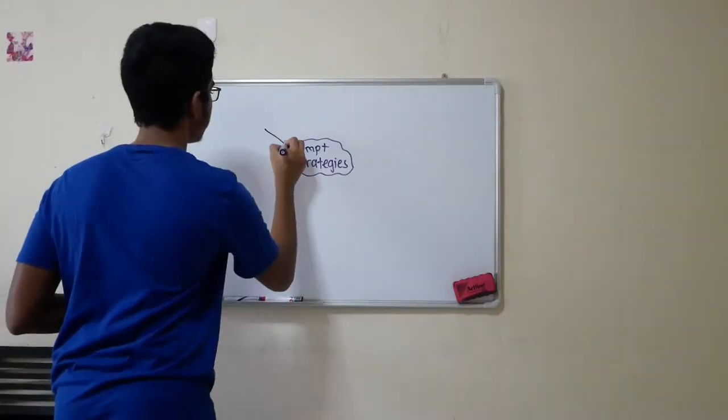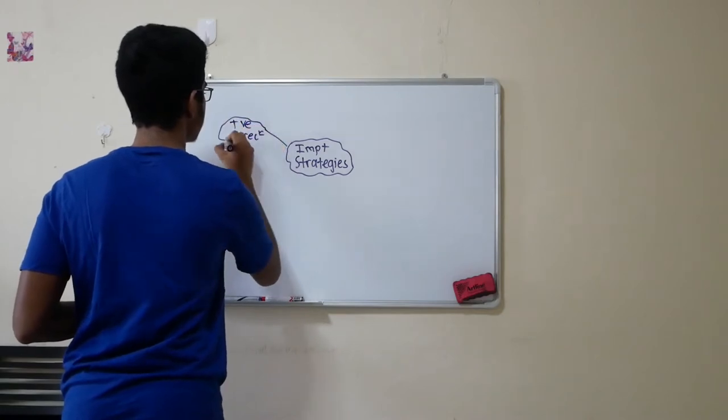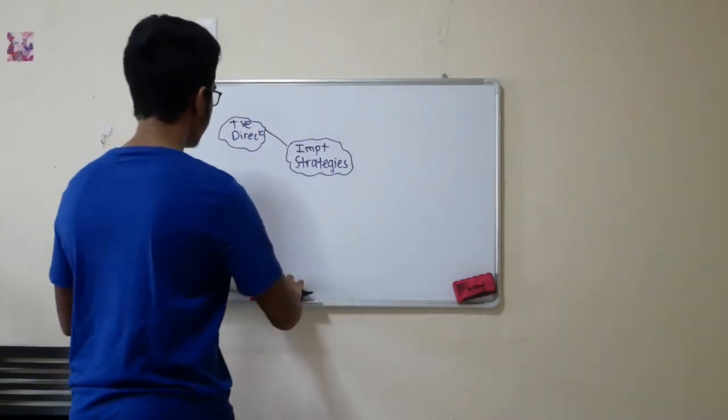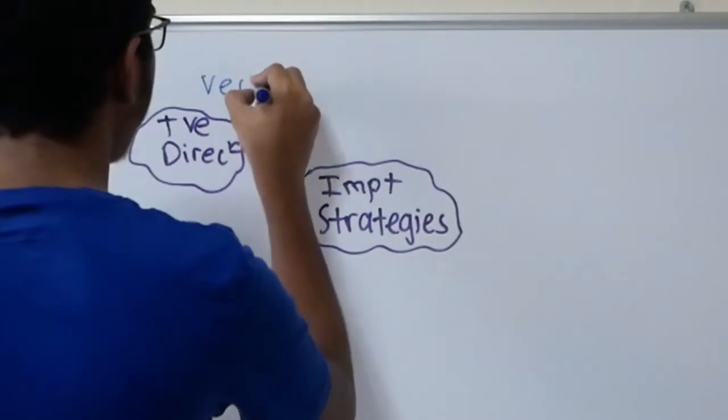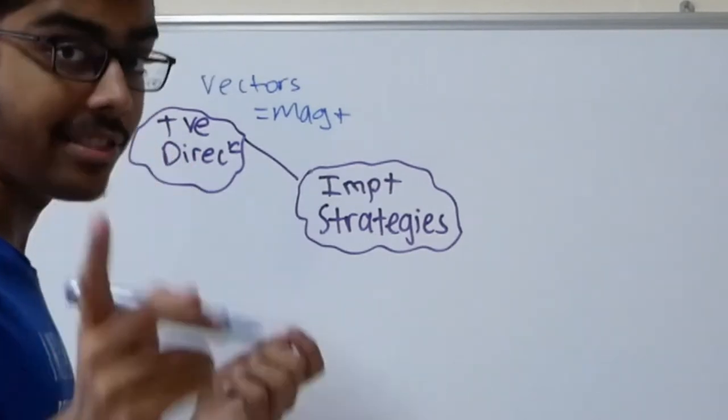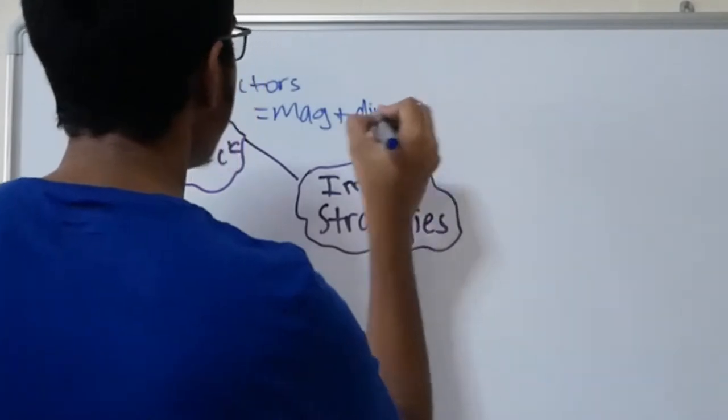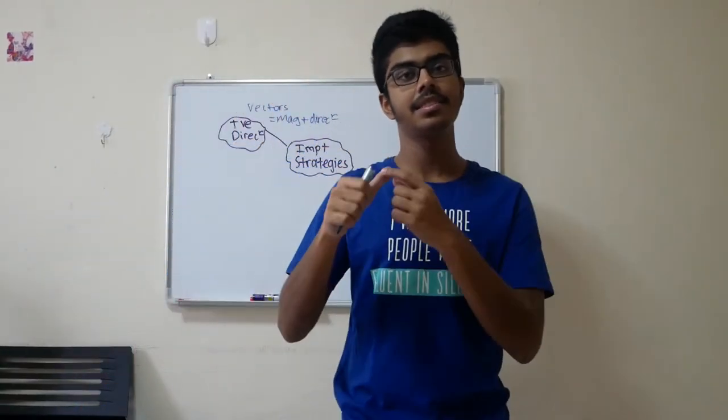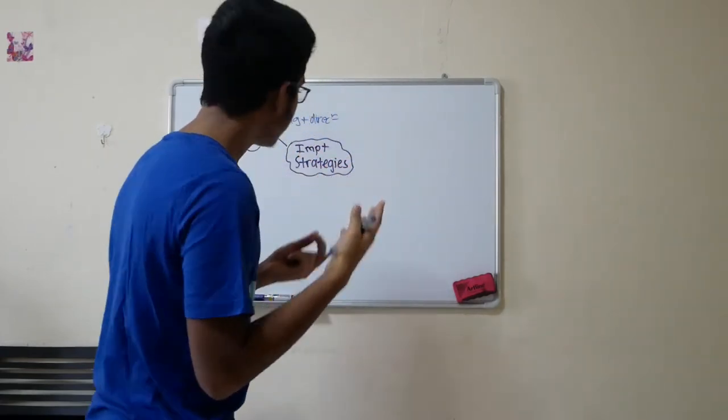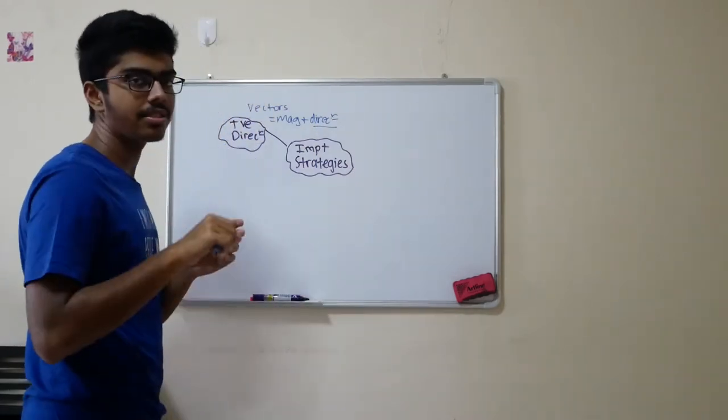Number one is to define the positive direction. A lot of people don't define the positive direction. The reason why you should do that is because vectors not only have magnitude, they also have direction as discussed in the previous video on measurement. So kinematics is filled with vectors. There's displacement, there's acceleration a, there's velocity. When you ignore the idea of direction, you screw up during exams.